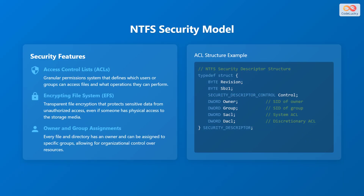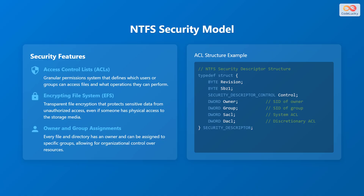The security features of NTFS include: Access Control Lists (ACLs), a granular permission system that defines which users or groups can access files and what operations they can perform. The Encrypting File System (EFS) provides transparent file encryption that protects sensitive data from unauthorized access, even with physical access to the storage media. Every file and directory also has an owner and can be assigned to specific groups, allowing for organizational control over resources. An example of an NTFS security descriptor structure is shown in code.